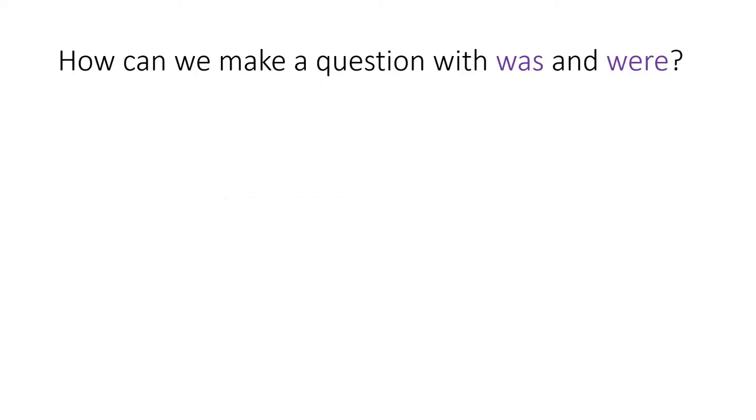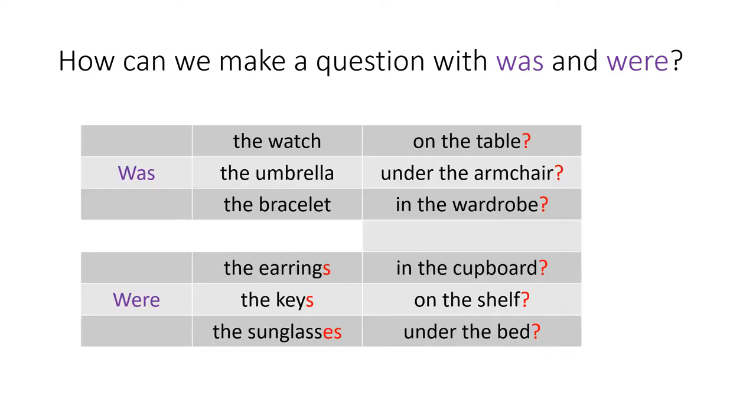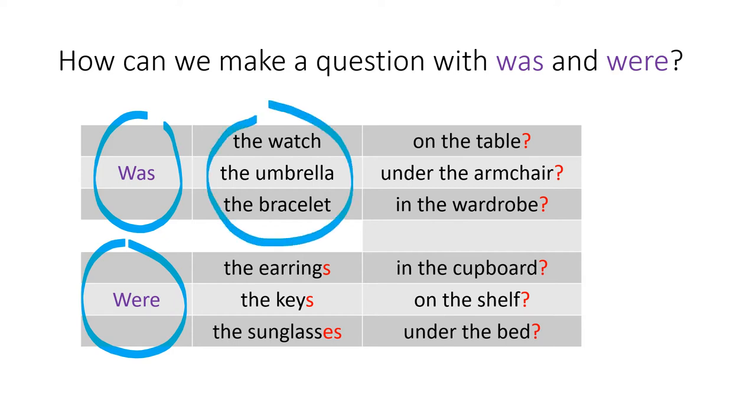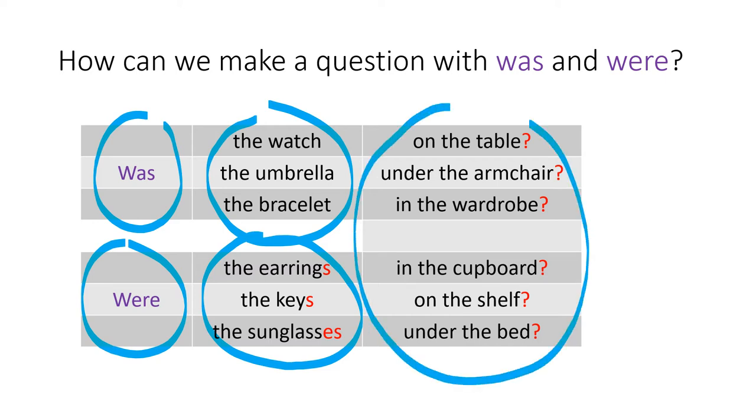So how can we make a question with was or were? Well we start with was or were of course, and then we have the object or objects that we are talking about and finally the place.